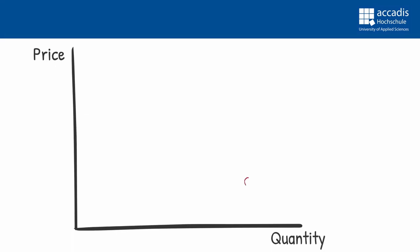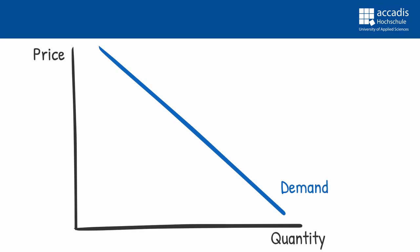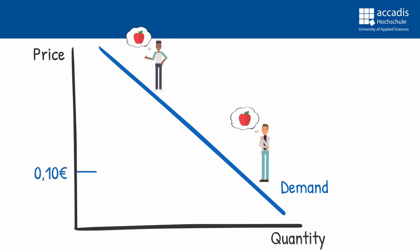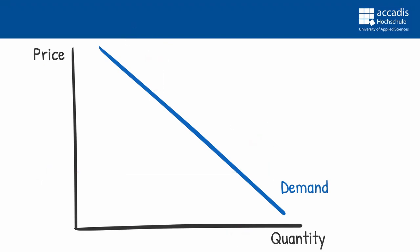The demand curve shows the willingness to pay and it's downward sloping. This means that as the price falls, more people with lower willingness to pay enter the market, increasing overall demand. Conversely, if the price goes up, the people with that lower willingness to pay exit the market, resulting in lower overall demand. This reaction is very common and we can assume it for almost all goods. When the price falls, we demand more, and when it rises, there will be lower demand.